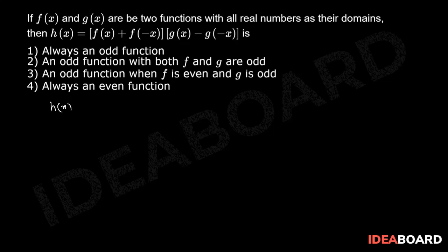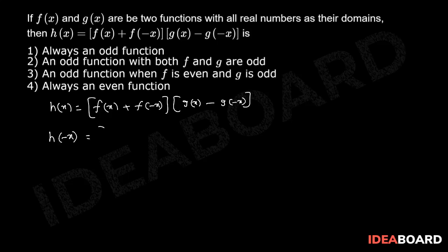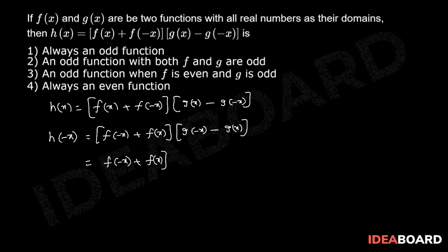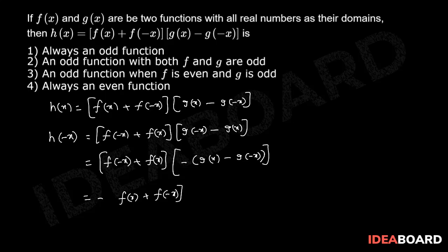Given h(x) = [f(x) + f(-x)] · [g(x) - g(-x)], we compute h(-x) = [f(-x) + f(x)] · [g(-x) - g(x)]. Taking minus as common, this equals [f(-x) + f(x)] · [-(g(x) - g(-x))], which equals -[f(x) + f(-x)] · [g(x) - g(-x)], that is, h(-x) = -h(x).